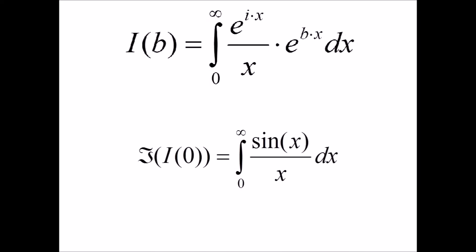Looking at our original integral, we would like to relate the two. We see that if we set b to zero, and if we take the imaginary part of the integral, we get sin of x over x. So, if we can integrate i of b, then we can obtain our original integral.